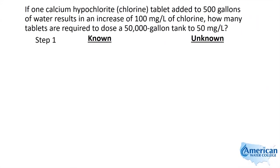If one calcium hypochlorite tablet added to 500 gallons of water results in an increase of 100 milligrams per liter of chlorine, how many tablets are required to dose a 50,000 gallon tank to 50 milligrams per liter? So we're looking for the total number of tablets to go into this 50,000 gallon tank to give us 50 milligrams per liter.